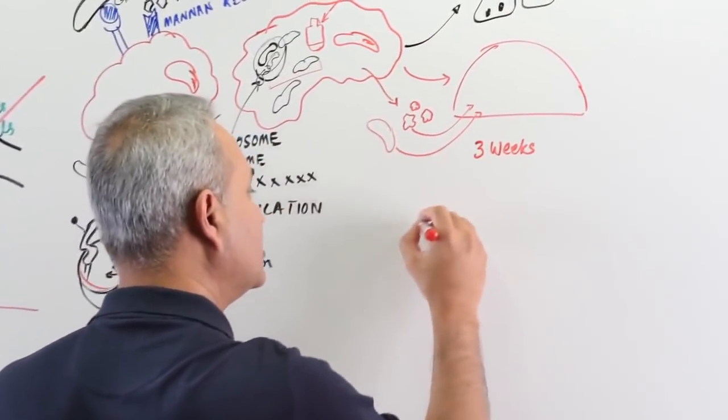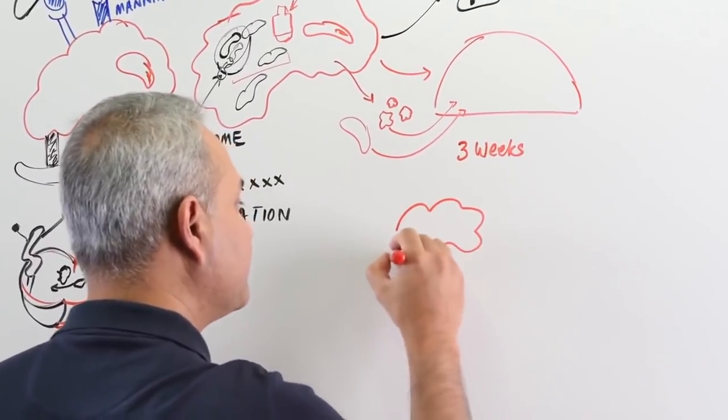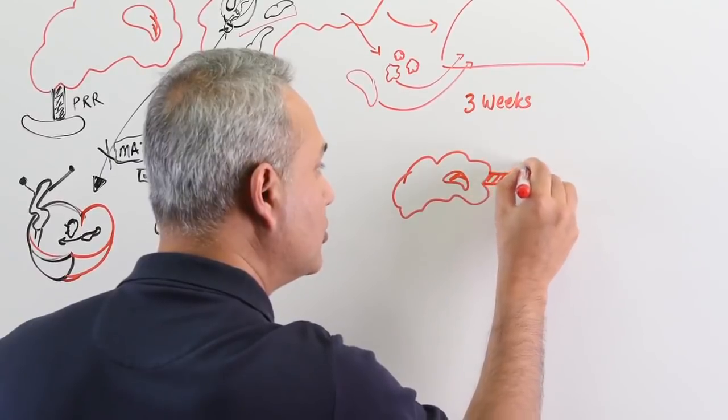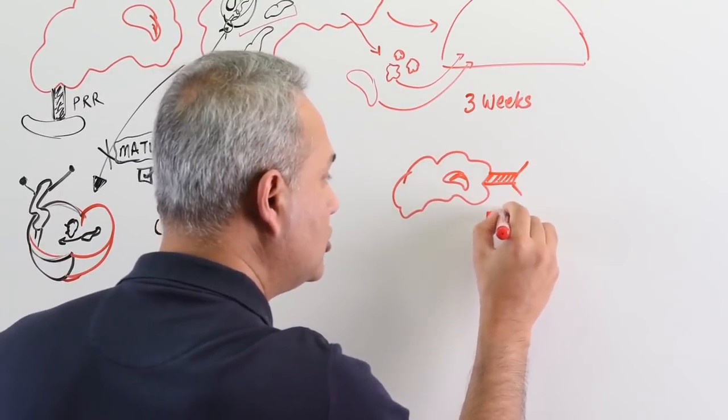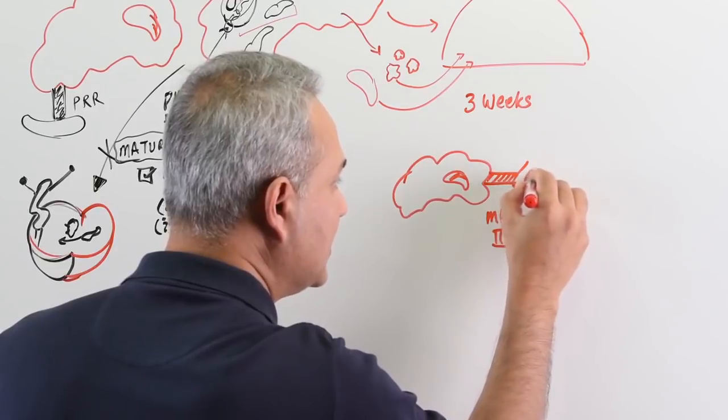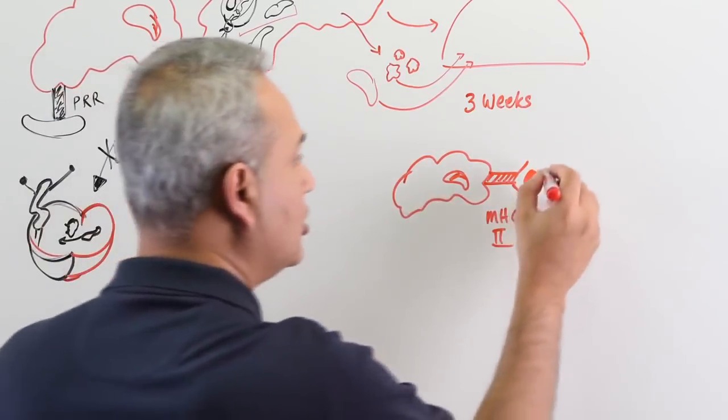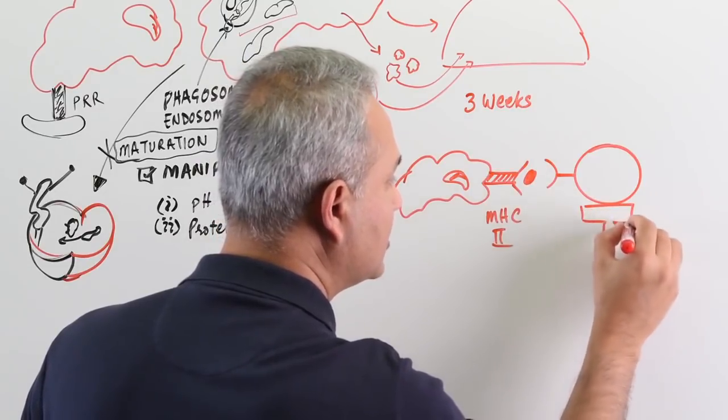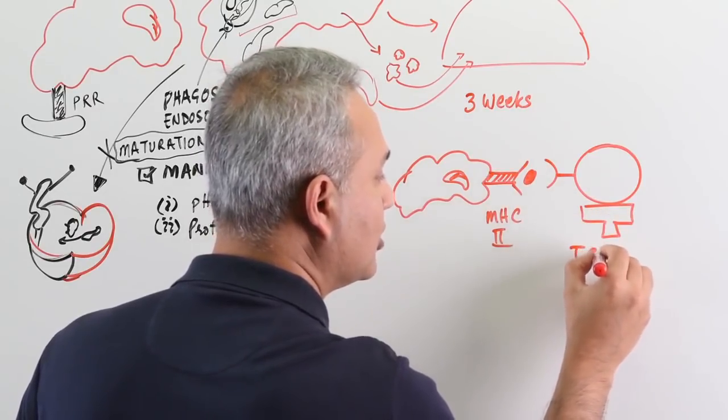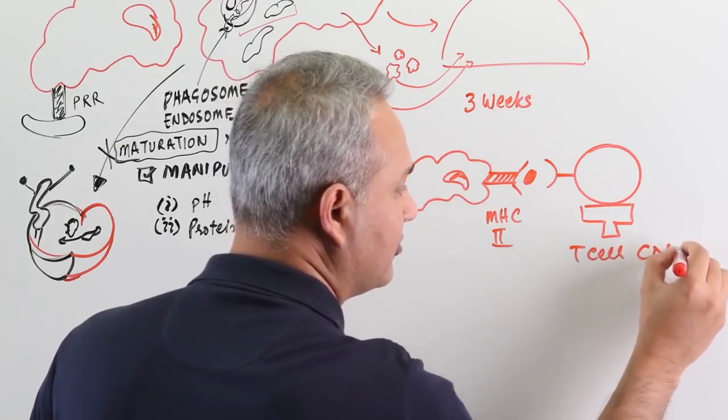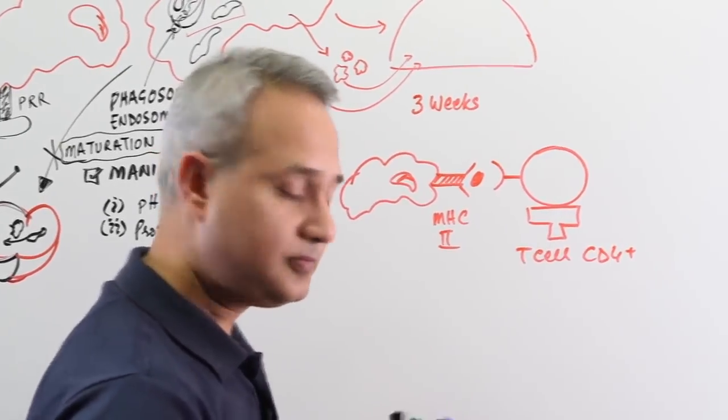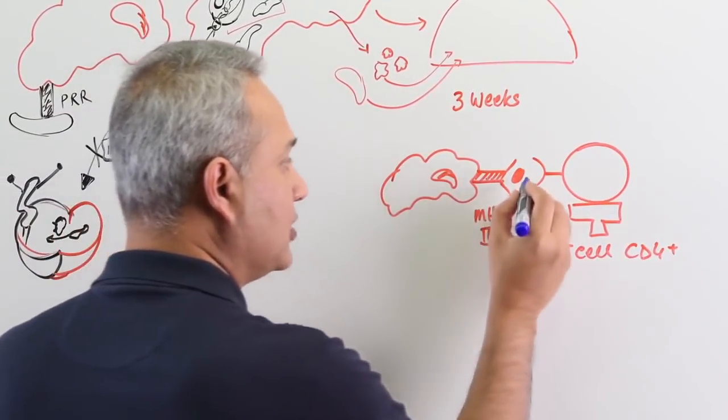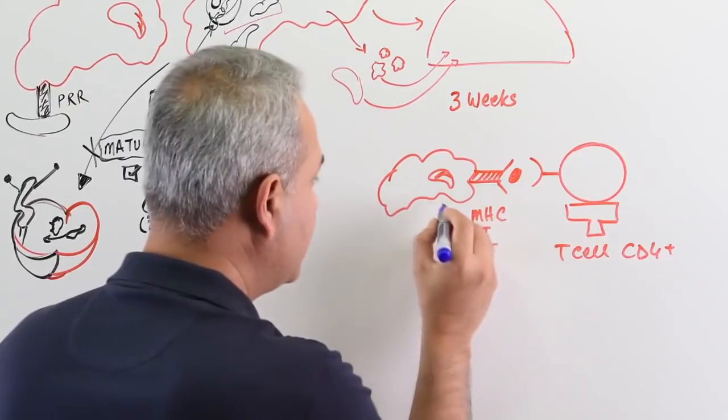This is the macrophage, on the macrophage MHC2, the macrophage is presenting the antigen or the pathogen to the T cell, which T cell? CD4 positive or helper T cells. Now, what happens? Sensitization would occur. Macrophage will bring the antigen there.